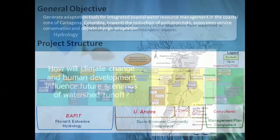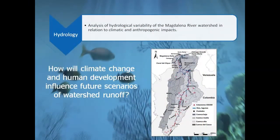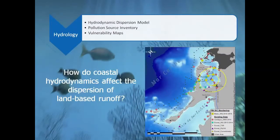With respect to watershed hydrology, the project's principal question is how will climate change and human development influence future scenarios of watershed runoff? Studies of the Magdalena River Basin will seek to analyze hydrological variability and generate future prognostics of the freshwater discharge from the DK Canal in the Cartagena Bay. These future scenarios can then be used to assess future scenarios of pollution in the coastal zone. A coastal water quality monitoring program will answer how coastal hydrodynamics affect the dispersion of fresh water from the DK Canal.